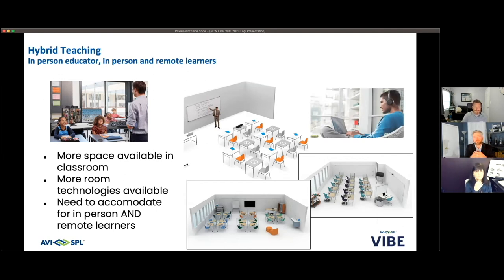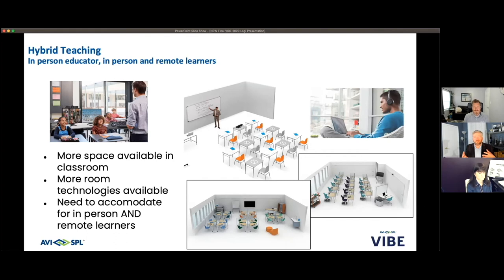There are examples here covering the hybrid learning model. The one in the middle shows an educator in front of a whiteboard with a Logitech Meetup camera that includes a 4K camera, mics, and speakers, allowing the educator to use a whiteboard within about six to eight feet to communicate with remote learners as well as in-person learners. Depending on the classroom and space available, camera placement will vary. It really comes down to understanding what space needs to be accommodated — contact your AVI-SPL rep to help assess the room size.